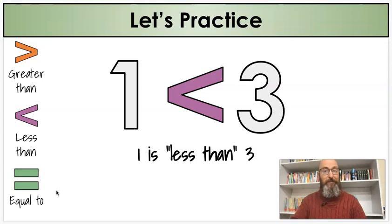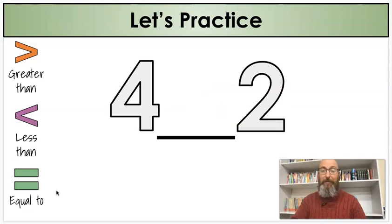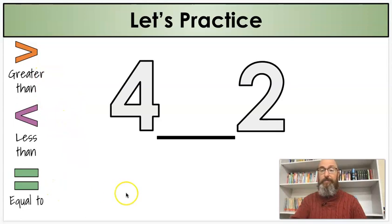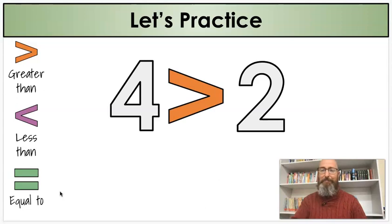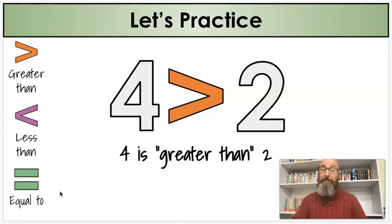Let's see if you can do one too. Here's our two numbers: four and a two. Is that greater than, less than, or equal to? Is four greater than two, less than two, or equal to two? Which one would you choose? Greater than — it's bigger than two, it's greater than two. So what's our sentence going to be? Four is greater than two.